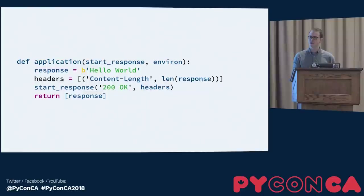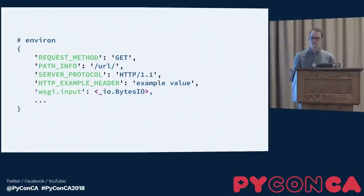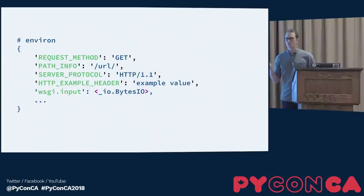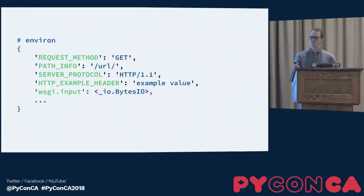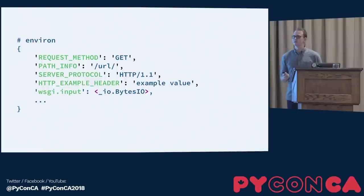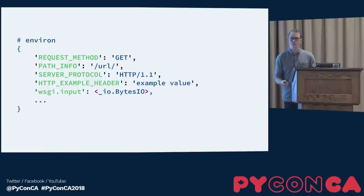The application also receives an environ object — a basic dictionary containing some information. This was a revelatory experience for me because that's HTTP embedded inside this dictionary. So I was starting to get a better sense of how that fits into the picture. But the dictionary looks kind of weird, and it had me wondering why I'm not just dealing with a request object, which is what I'm most familiar with.